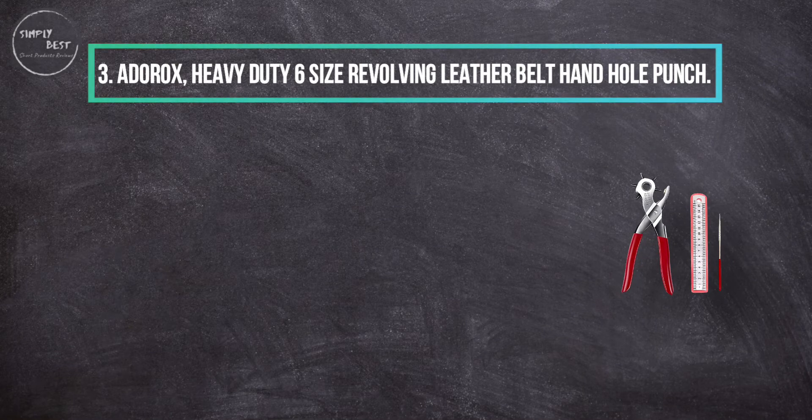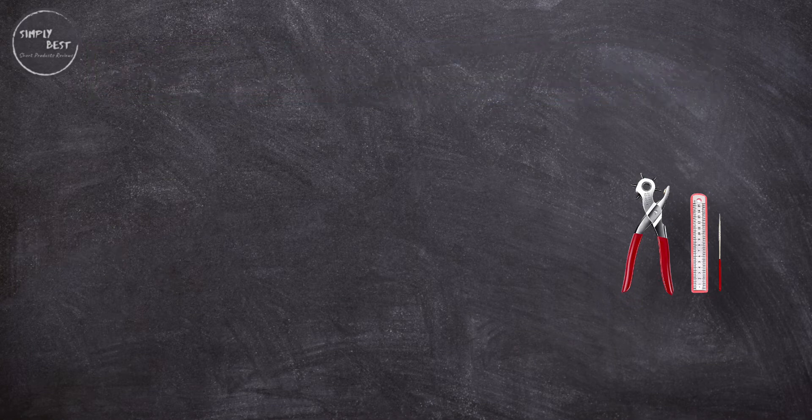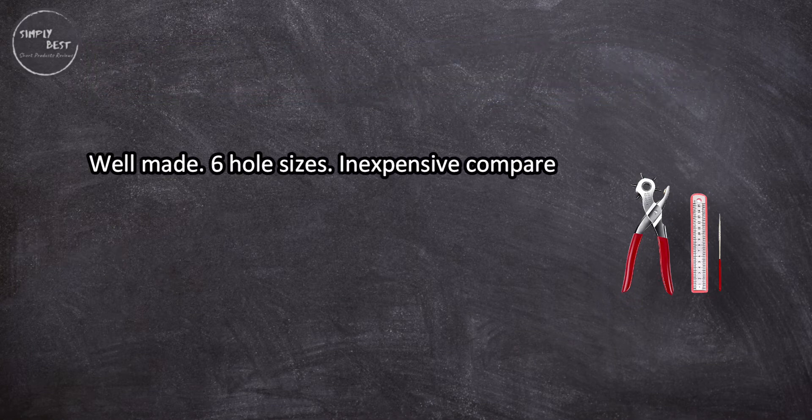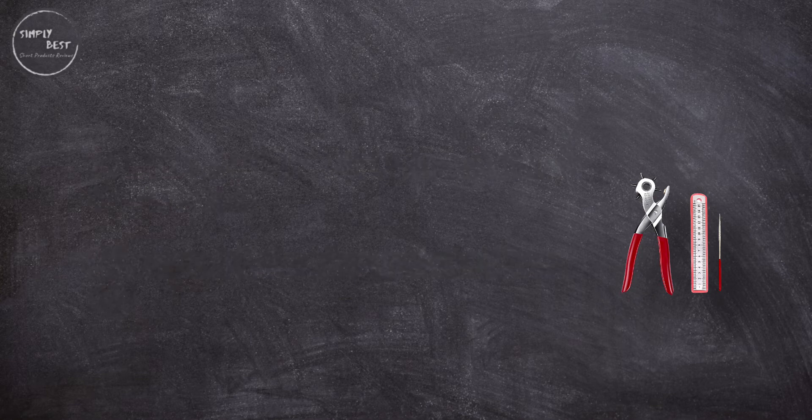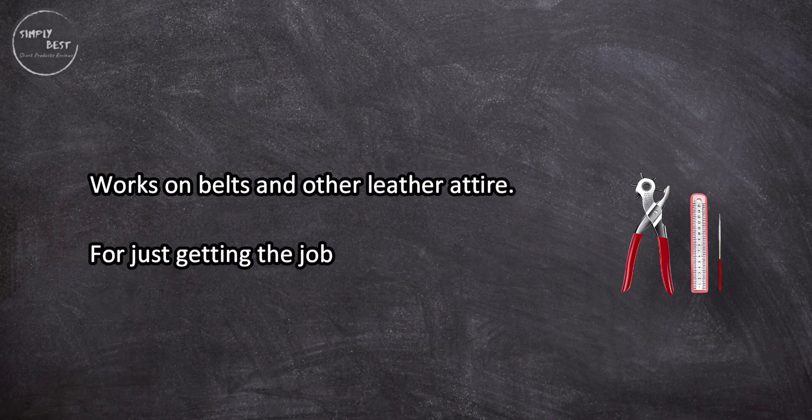At number three, Addrox Heavy Duty 6 Size Revolving Leather Belt Hand Hole Punch. Well-made, six hole sizes, inexpensive compared to other models. A simple tool, the handles are comfortable to use, works on belts and other leather attire.